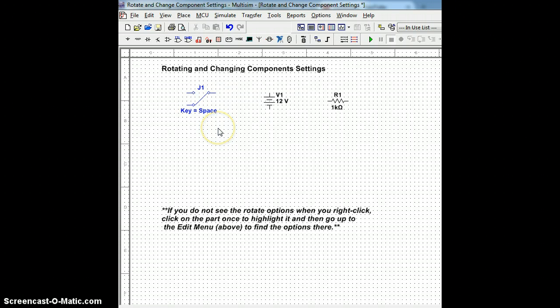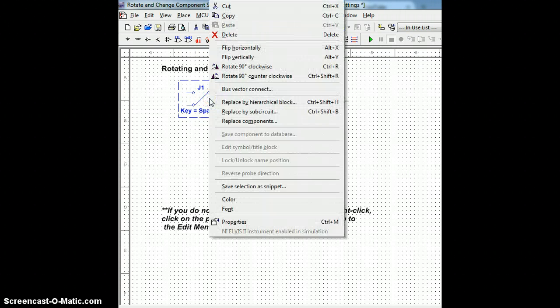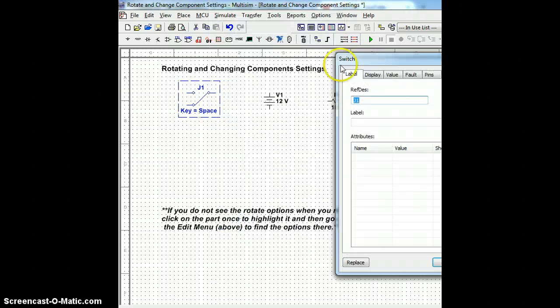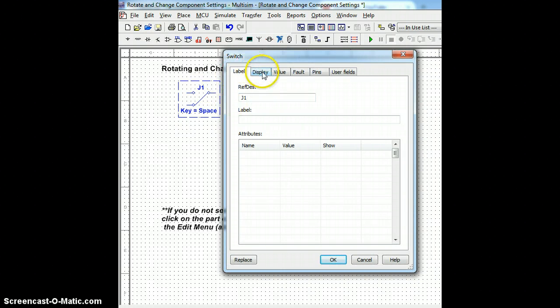For any component that you choose in Multisim, each part can be given some additional properties and settings that you can change. If I click on this part and then right-click with my mouse, I can go down to the Properties menu and pull up a little menu which shows me what I can do with it. On the top, each tab indicates a value that I can change within that part.